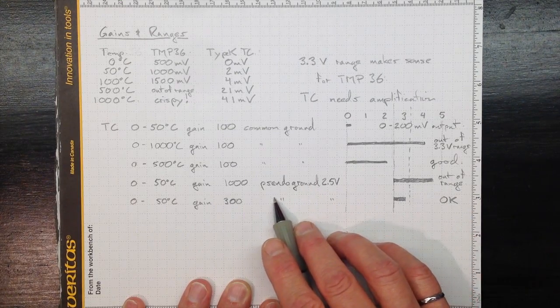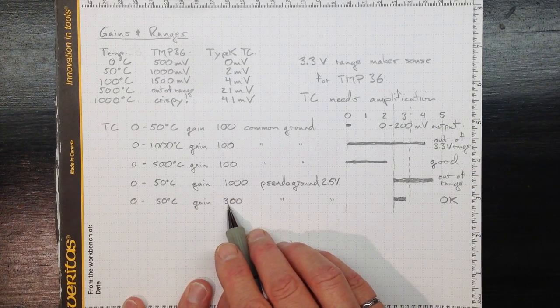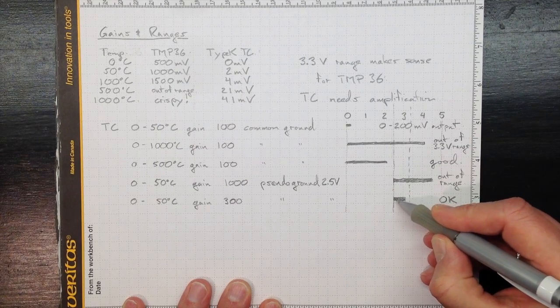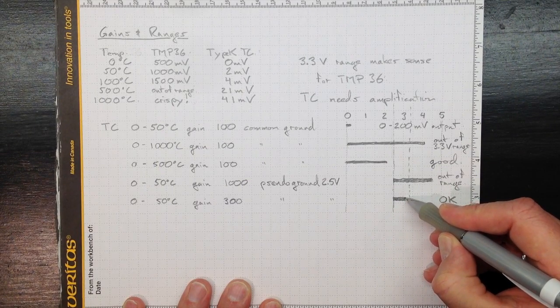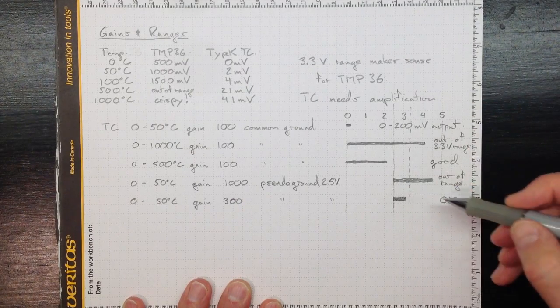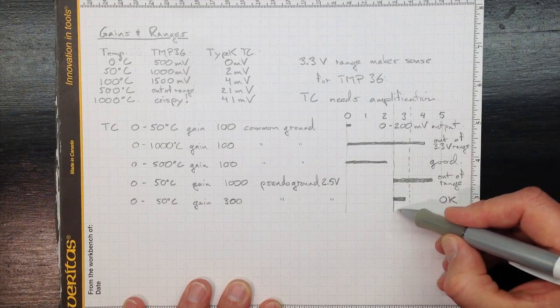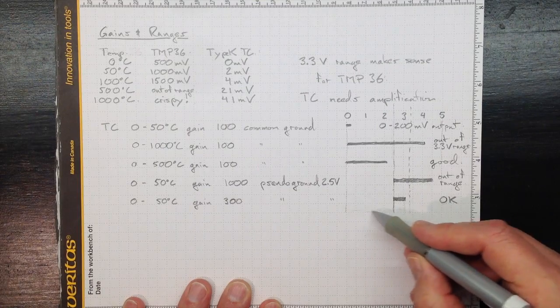We need to make the gain lower in order to fit back into the range. So try a gain of about 300. That puts us in this range here, 2.5 plus 600 millivolts gets us up to about 3.1 volts. So that stays within our measurement range. This is okay, but it's still using a fairly small fraction of the total measurement range I've got available to me.